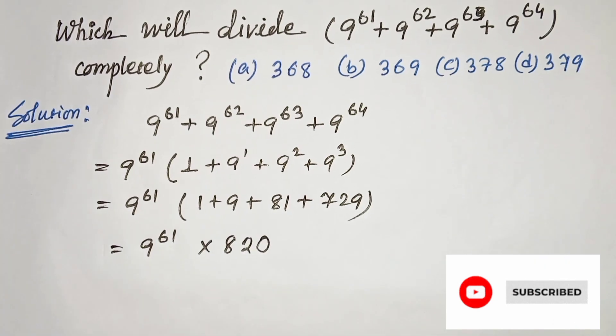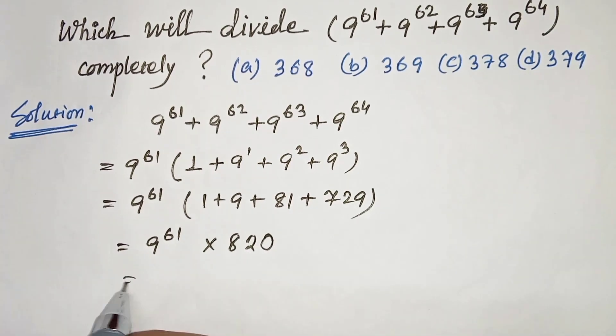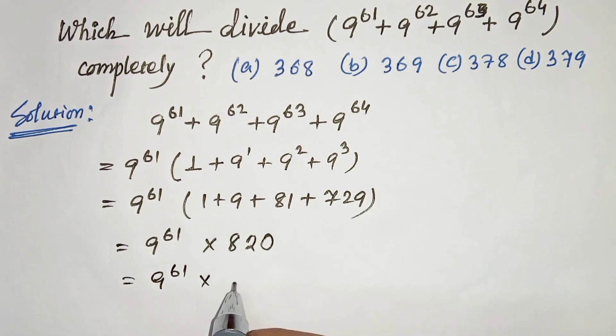820. Now let's break this 820. We will get 820 can be written as 41 times 20.